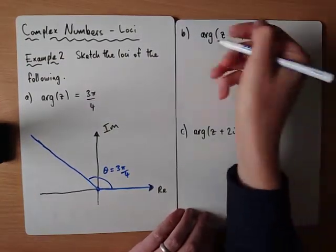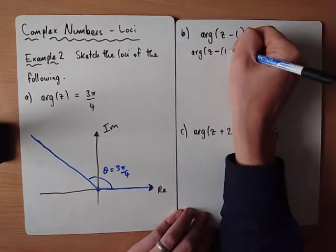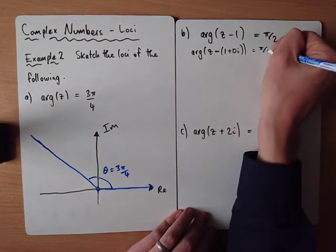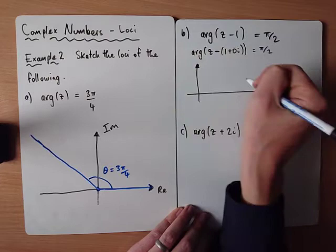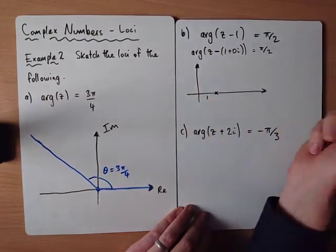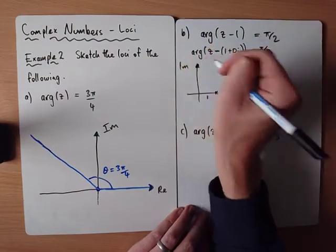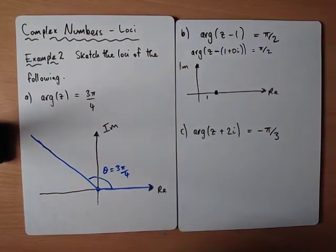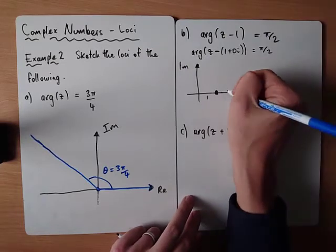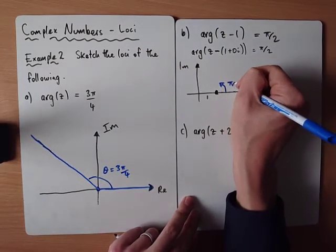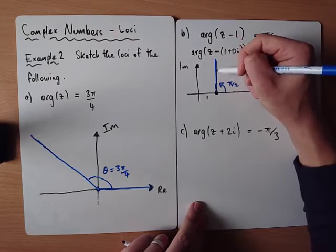For argument of z minus 1 equals pi over 2: think of it as z minus (1 + 0i), meaning we measure the argument from the point 1 on the real axis. The half line starts at (1, 0). An argument of pi over 2 is 90 degrees, so the half line goes straight up — it's a vertical line starting at that point.